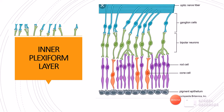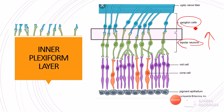Next is the inner plexiform layer. Moving inward from the bipolar neurons, the bipolar neurons synapse with the ganglion cells. These synapses again consist only of axons and dendrites — no nuclei are present — so it is called a plexiform layer. Because it is present towards the inside of the retina, towards the vitreous, it is called the inner plexiform layer.